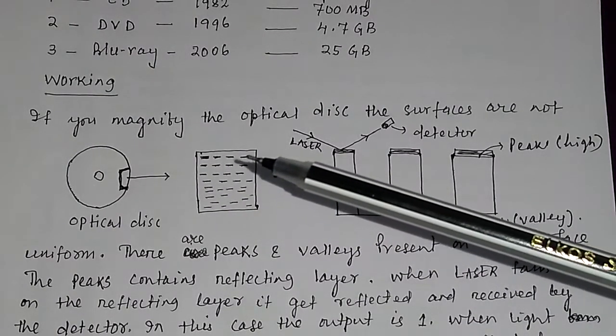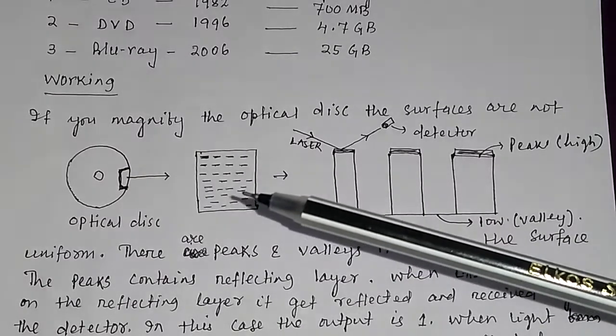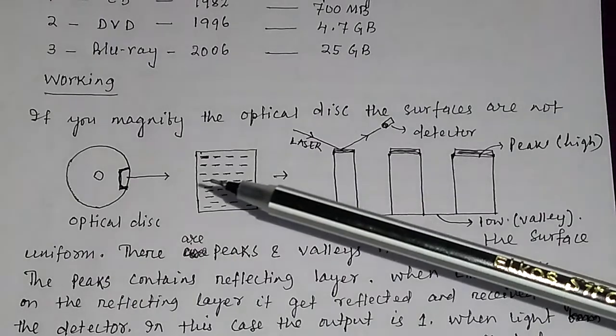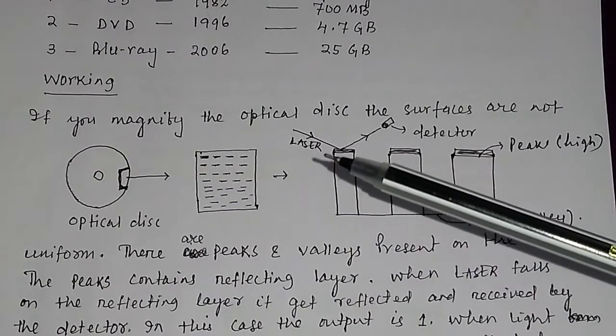And if you look to this section, you will see there are peaks and valleys present in the surface. The surface is not uniform. There are peaks and valleys.